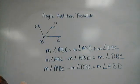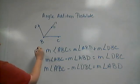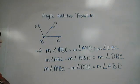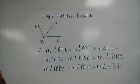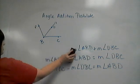So this is your main one: the sum of the two smaller angles equals the larger angle. We're going to use this postulate to find some missing values.